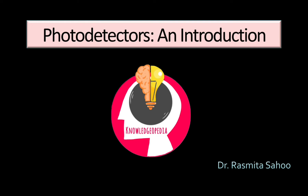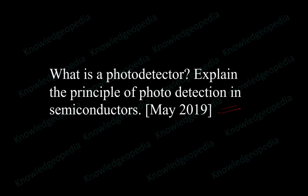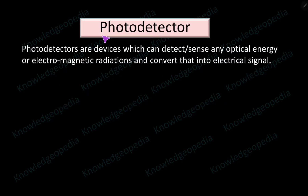Hello friends, today we start with a new concept: the photo detector. In 2019 there was a question in the JNTU paper: what is a photo detector? Explain the principle of photo detection in semiconductors. After going through today's video you will be able to answer this question. So let us start with what is a photo detector. From the name we can break this into two parts: photo and detector, meaning this device is detecting photons — quantum packets of light energy. So this device can detect or sense any optical energy or electromagnetic radiations and convert that into electrical signal.